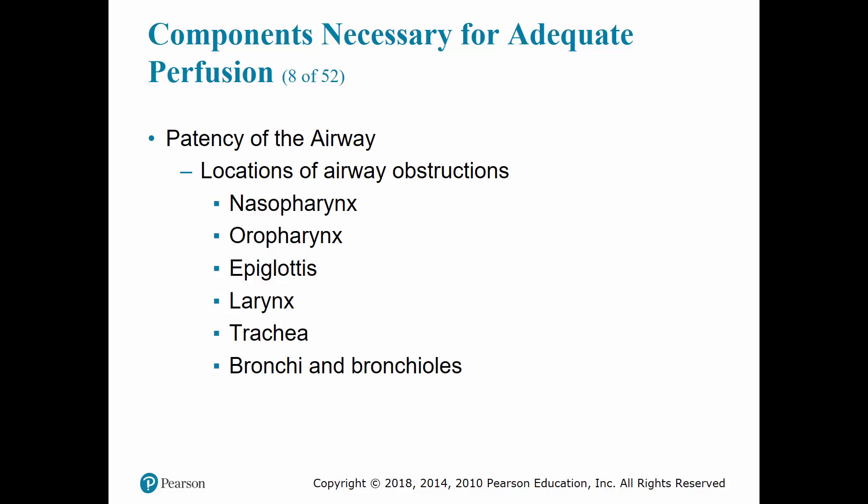Any obstruction in the oropharynx must be removed immediately. The epiglottis is a flap of cartilaginous tissue that covers the opening of the larynx during swallowing; if it is injured, swells, or becomes inflamed from infection, it can occlude the airway at the level of the larynx. The larynx can be obstructed by laryngeal spasm — also called laryngospasm — where the vocal cords spasm and close together, preventing any air from passing through into the trachea. A fracture to the larynx may cause laryngeal structures to lose stability and be drawn inward, creating an obstruction.